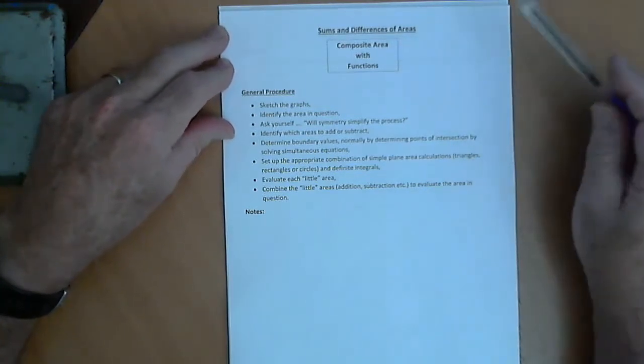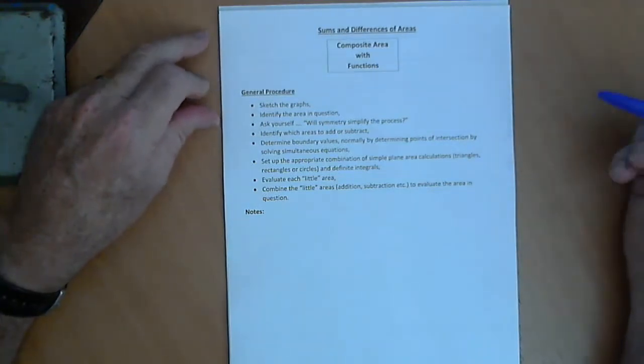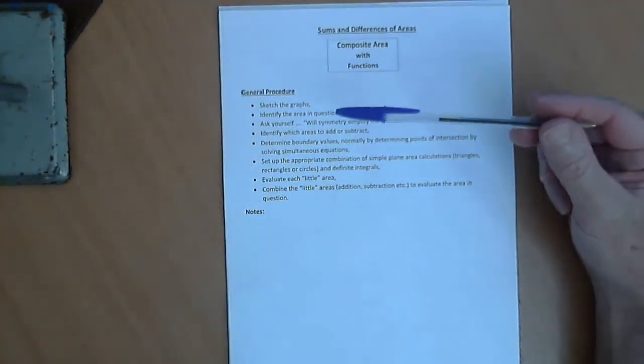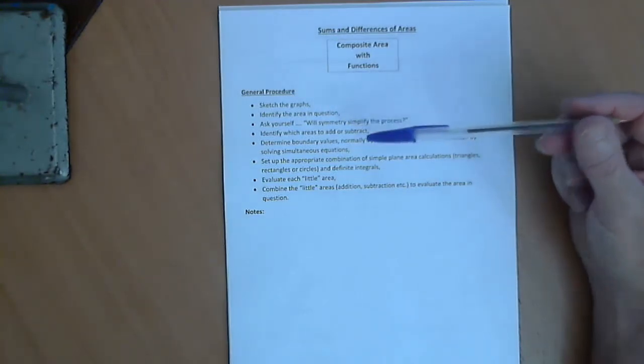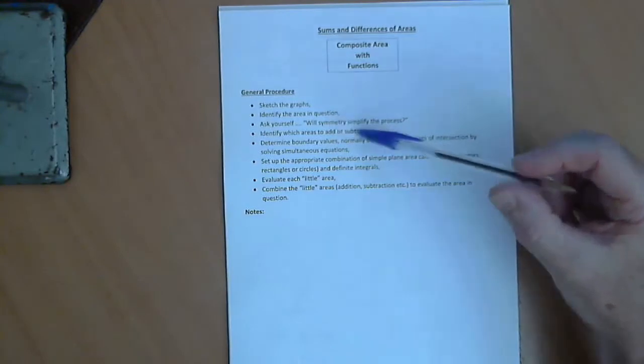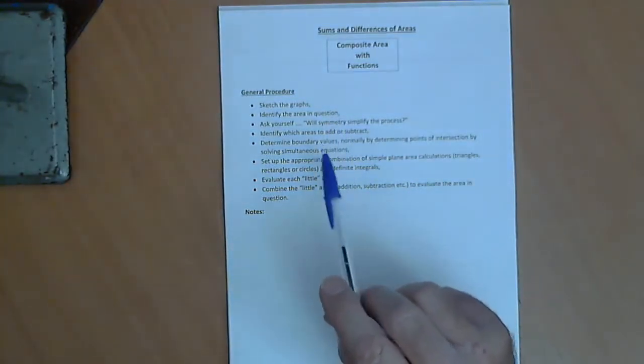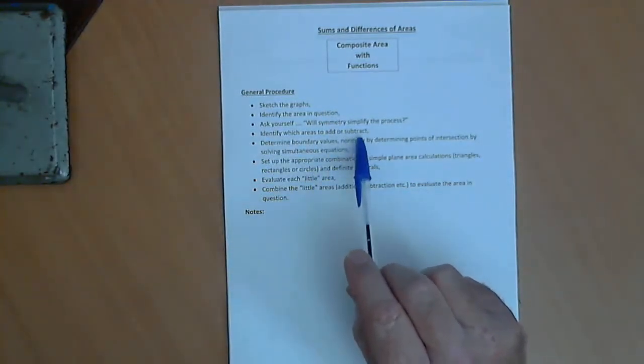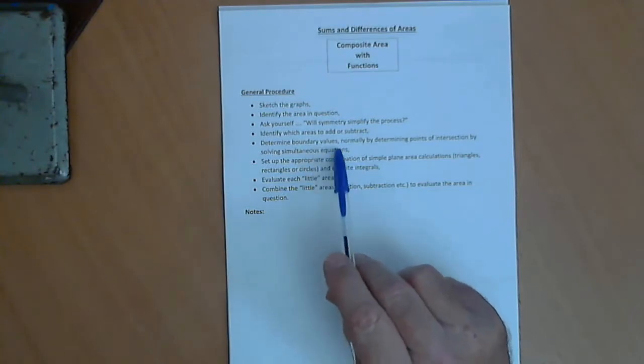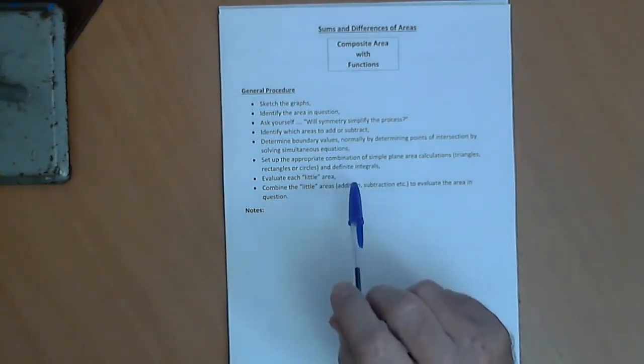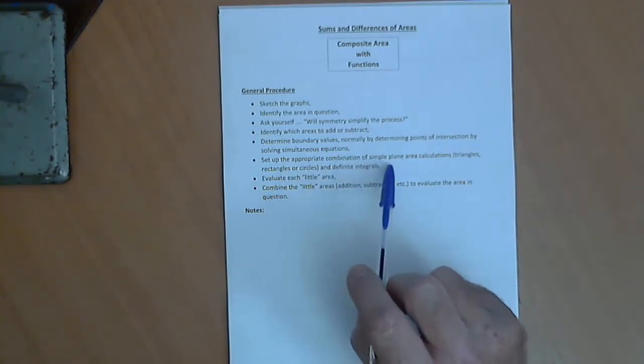Now, when we do this, we've got a general procedure. Like most problems like this, we need to sketch graphs, identify your areas in question. You might be able to use some symmetry to help you out. Identify which areas you need to add or subtract, work out boundary values, often by solving simultaneous equations. Then you need to set up your calculations.